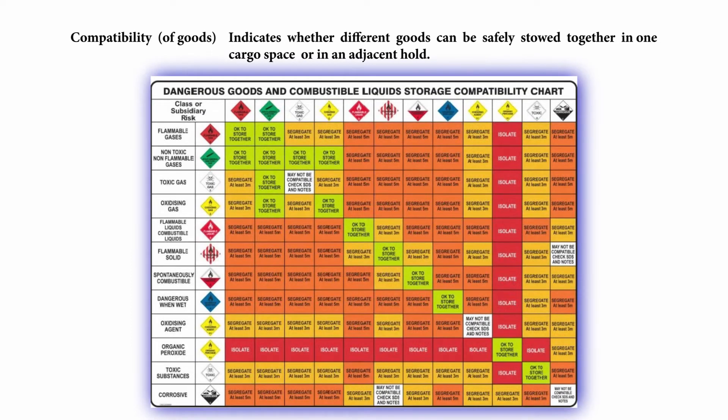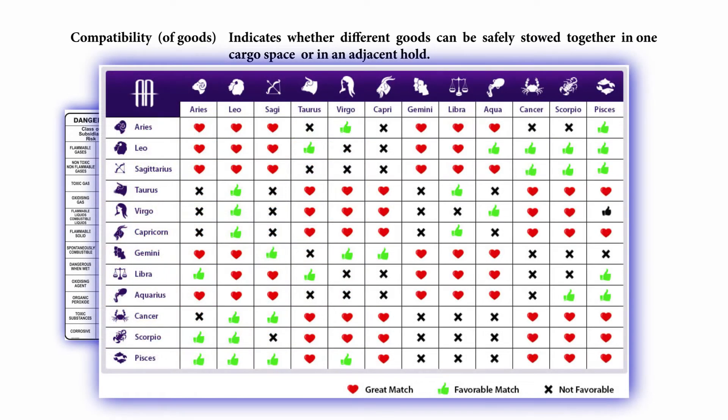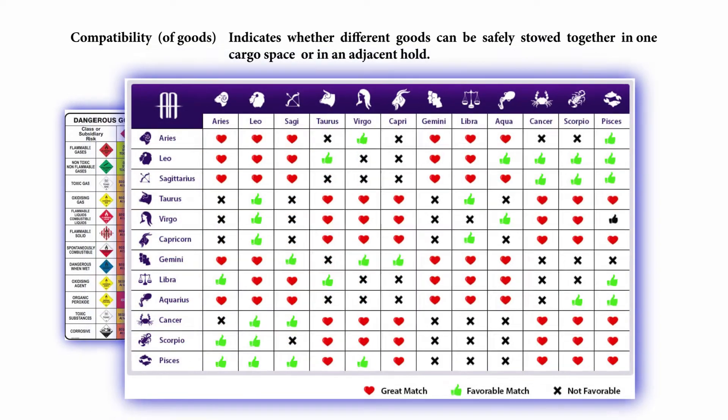Compatibility of goods: it indicates whether different goods can be safely stowed together in one cargo space or in an adjacent hold.